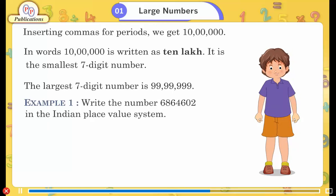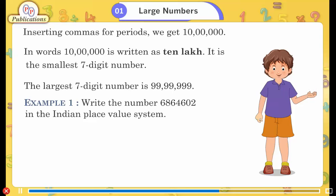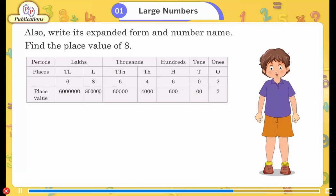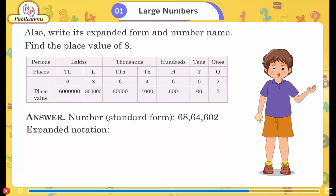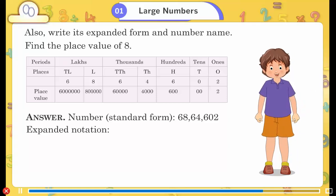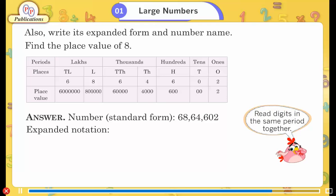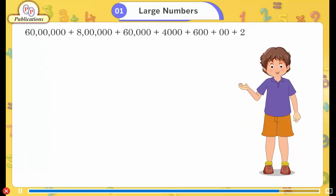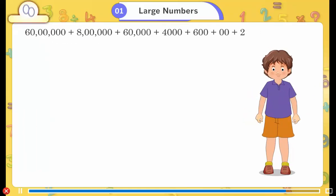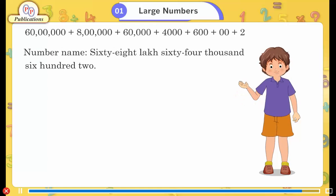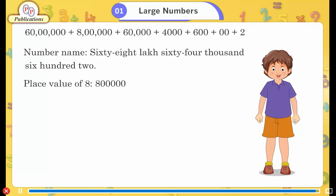Example 1: Write the number 68 lakhs 64,602 in the Indian place value system. Also write its expanded form and number name. Find the place value of 8. Answer — standard form: 68,64,602. Read digits in the same period together. Expanded notation: 60 lakh + 8 lakh + 60,000 + 4,000 + 600 + 0 + 2. Number name: sixty-eight lakh sixty-four thousand six hundred two. Place value of 8: 8 lakh.